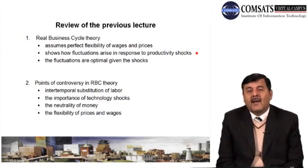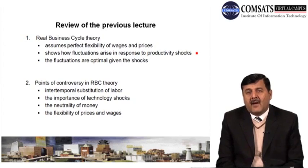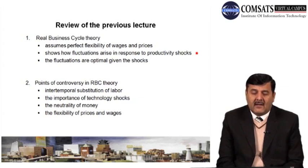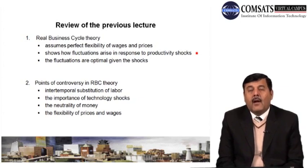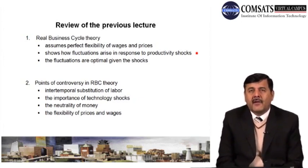In RBC theory, we talked about the neutrality of money, but critics argue that money is not neutral even in the short run. Whenever there are economic fluctuations, money starts working and the economy returns to equilibrium. This is another point of controversy between the RBC theory and other economists.